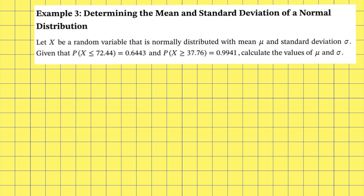In example three we're going to be determining the mean and standard deviation of a distribution. Let x be a random variable that is normally distributed with mean mu and standard deviation sigma. Given that the probability that x is less than or equal to 72.44 is equal to 0.6443, and the probability that x is greater than or equal to 37.76 is equal to 0.9941, calculate the values of mu and sigma.